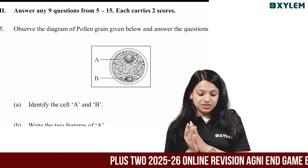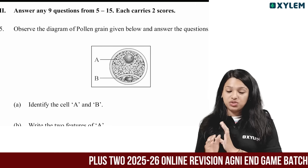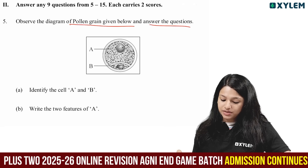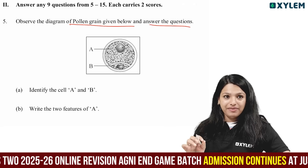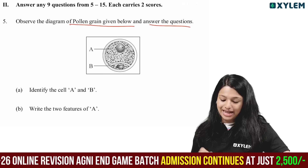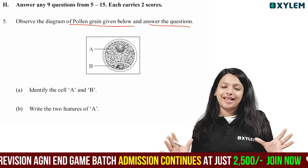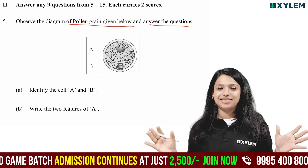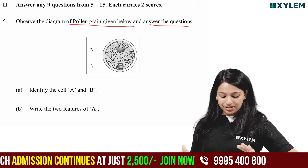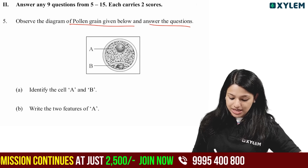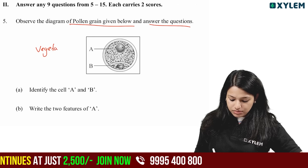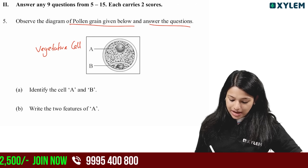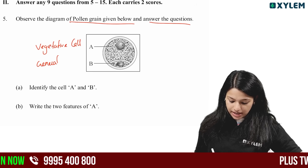Section two-mark questions are diagram-based questions. Observe the diagram of pollen grain given and answer the question. Identify the cells A and B. A is the vegetative cell, B is the generative cell.